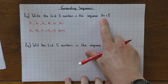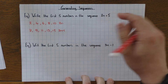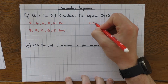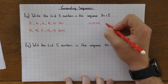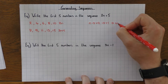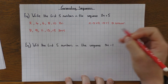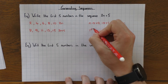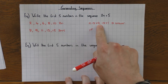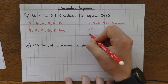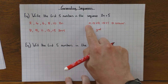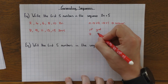The other way is to use the flowchart or substitution. So I've got n, I times it by 2, I add 5, and then I get my answer. So if I want the first term in the sequence, n would be 1, 1 times 2 is 2, plus 5 is 7. For the second number, n would be 2, 2 times 2 is 4, plus 5 is 9.